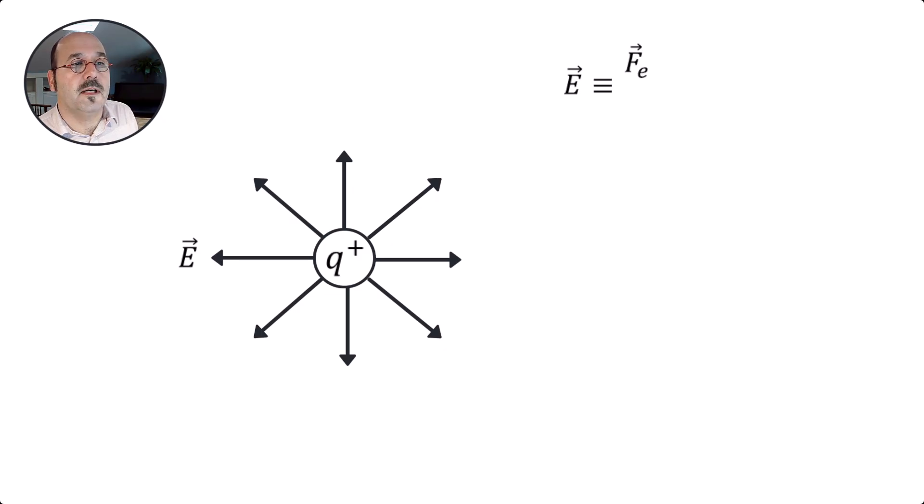That force is a vector quantity itself; that's where the electric field gets its vector nature. It is imposed on a small test charge, so this q₀ is small in the sense that it's not going to contribute its own electric field to the distribution coming from our Q+ source charge.